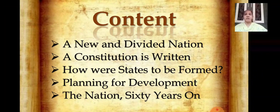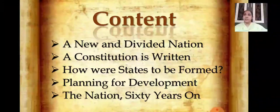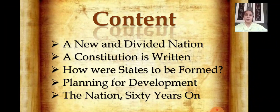Then we have seen one feature of the constitution was its adoption of universal adult franchise. All Indians above the age of 21 would be allowed to vote in state and national elections. Initially it was 21, but then it was changed to 18 years. Then we have learnt that the second feature of the constitution was that it guaranteed equality before the law to all citizens, regardless of their caste or religion. These are the topics we have covered in our previous live session.